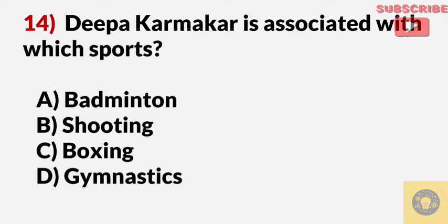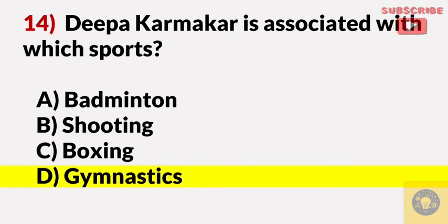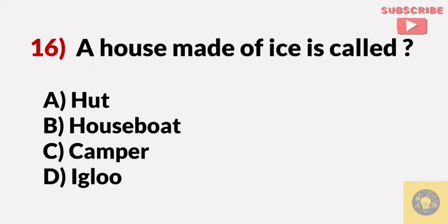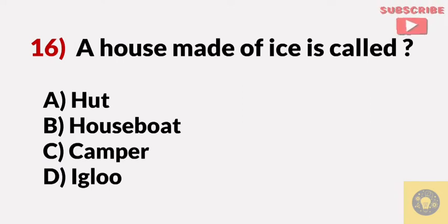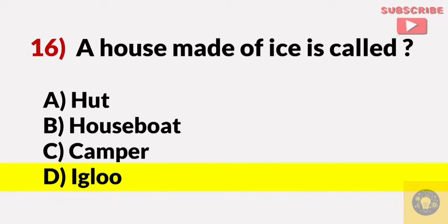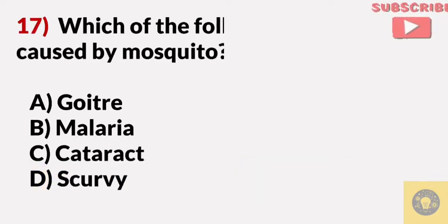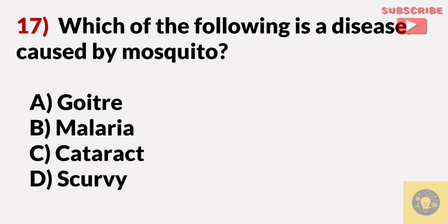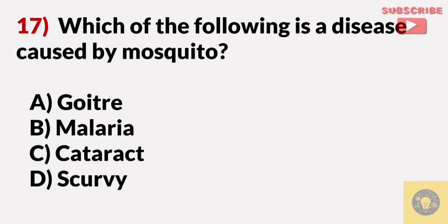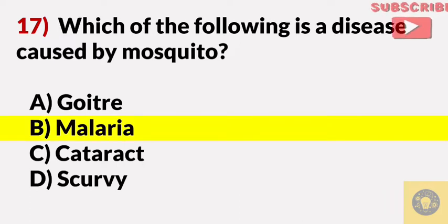Deepak Kumar is associated with which sport? Answer D, gymnastics. A house made of ice is called — Answer D, igloo. Which of the following is a disease caused by mosquito? Answer B, malaria.